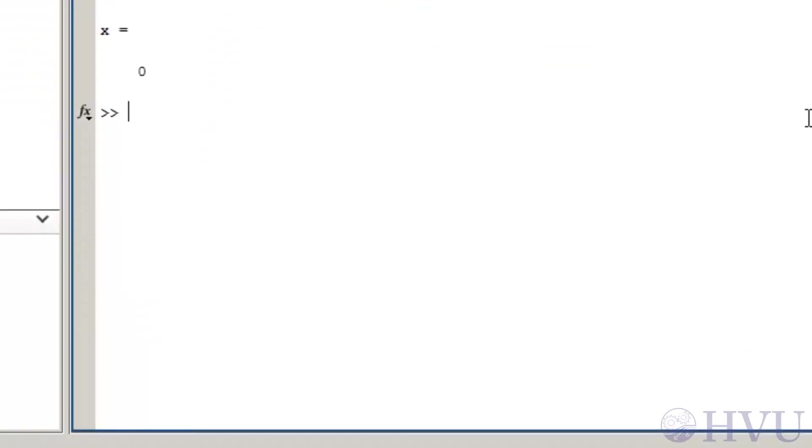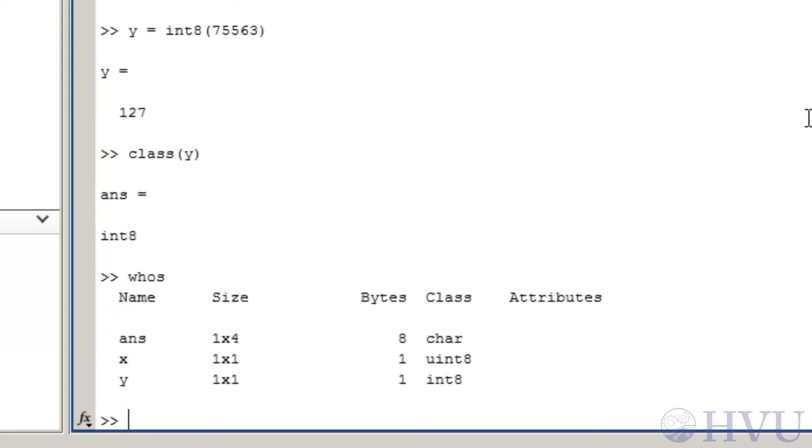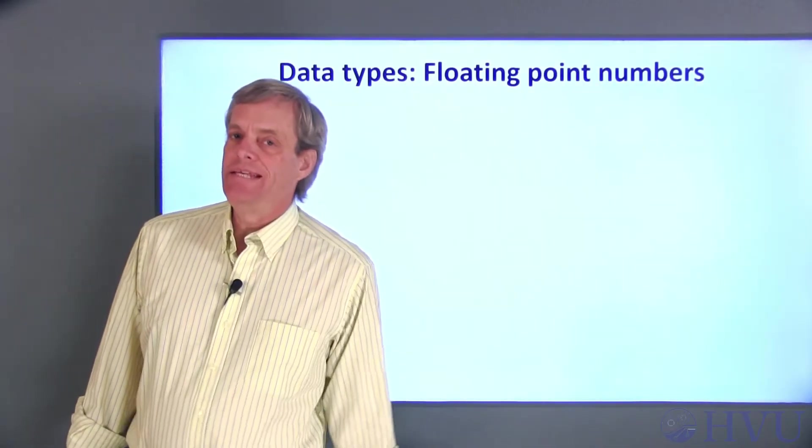Now I'll create a variable y by typing int8 of 75,563. The largest signed 8-bit integer is 127, so anything above that value is thrown away. The extra bits needed to represent the larger number overflow out of the 8 bits available to represent the number, so the difference between the actual number and its 8-bit representation is called overflow error. To see the data type of the variable y, I can use the class command. It's displayed as being a signed 8-bit integer. The whos command also displays the data types of the variables in the workspace.